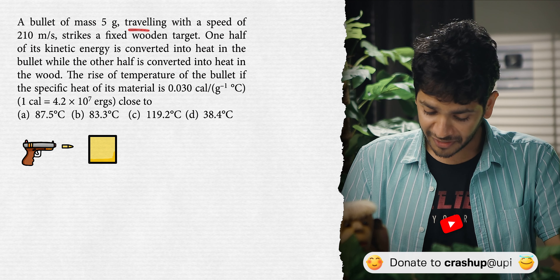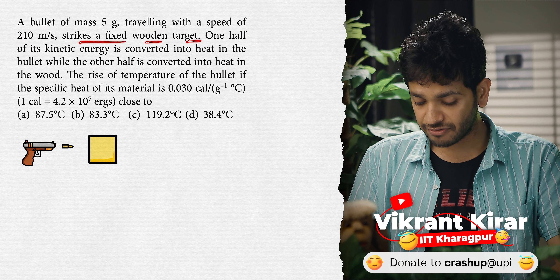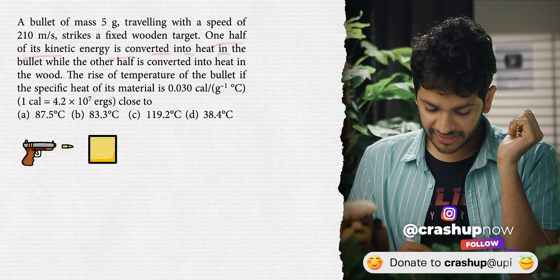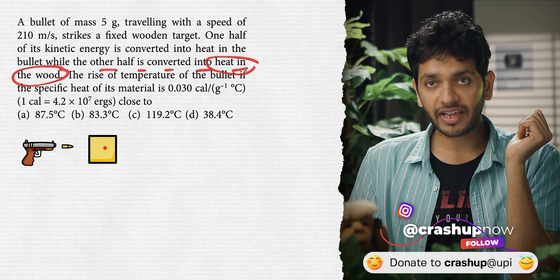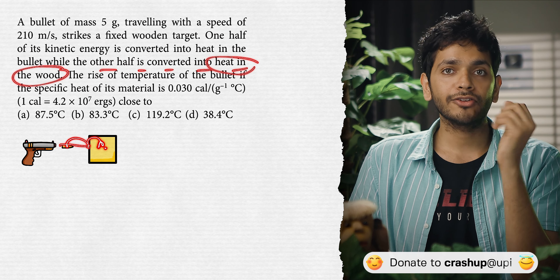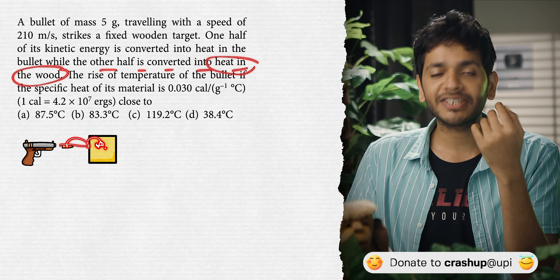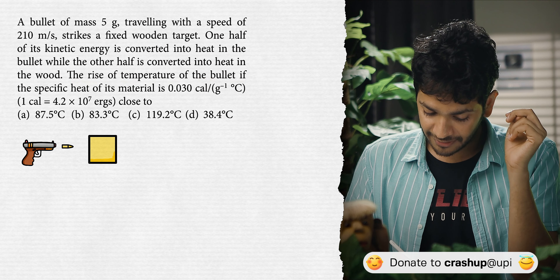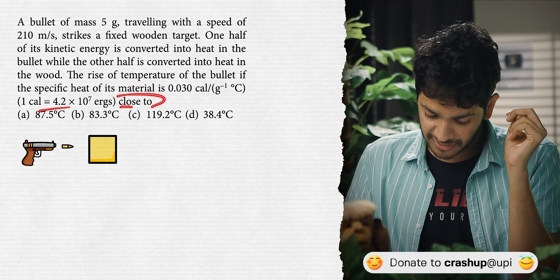A bullet of mass 5 gram traveling with a speed of 210 meter per second strikes a fixed wooden target. Half of its kinetic energy is converted into heat in the bullet while the other half is converted into heat in the wood. The question asks for the rise in temperature of the bullet if the specific heat capacity of its material is given.